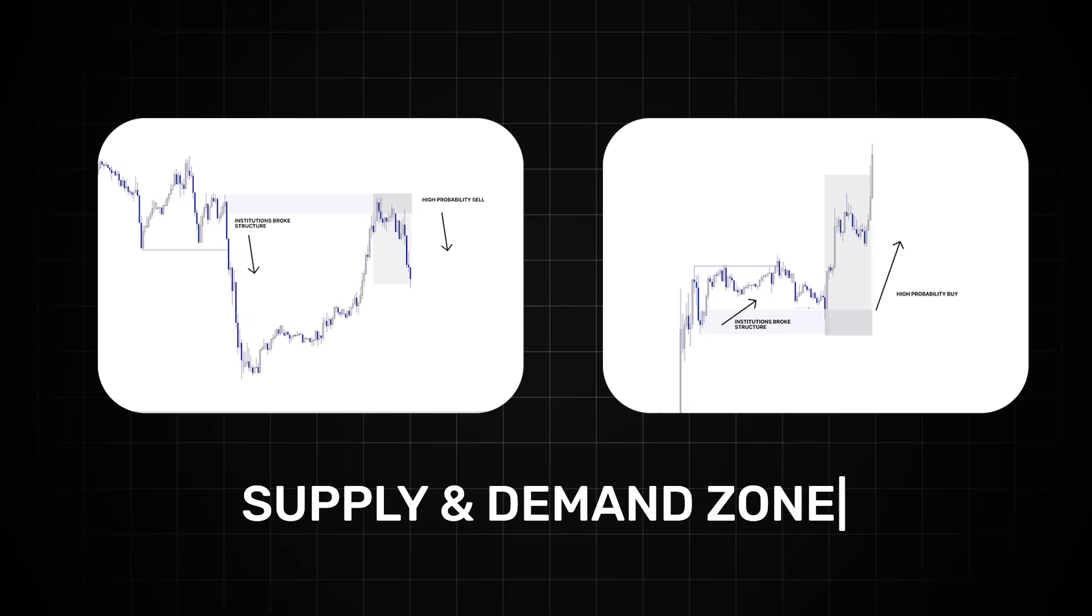Now, obviously, you and me, we're not quite trading at the size big enough yet to move those big liquid markets. So how do we make sure that we are trading on the right side of that institutional order flow? And that's where supply and demand zones come into play. But how do we identify these zones?